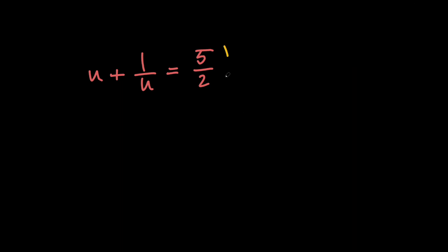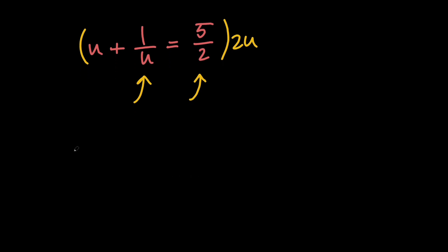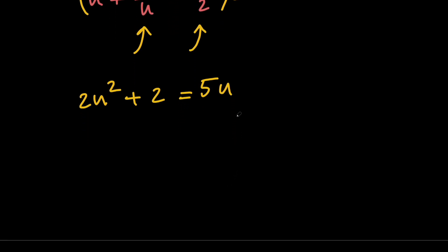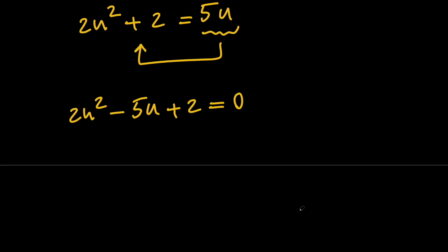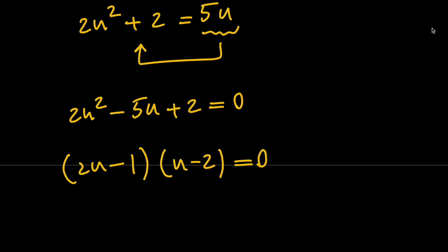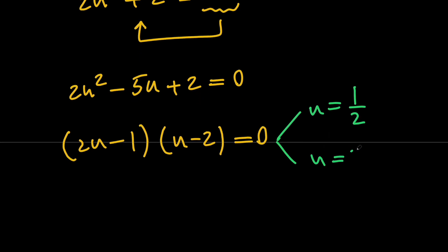To solve for u, let's multiply everything by 2u to get 2u squared plus 2 equals 5u. Moving 5u to the left hand side gives 2u squared minus 5u plus 2 equals 0. Using the factoring method, the left hand side factors into (2u minus 1)(u minus 2), giving us two cases: either u equals 1 half or u equals 2.